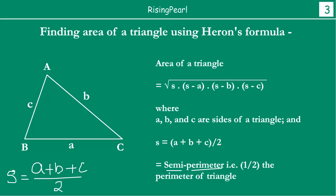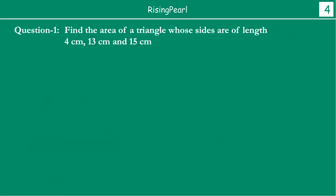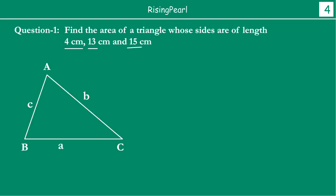Now that we know what Heron's formula is, let us do a quick application. Let us solve a question: find the area of a triangle whose sides are of length 4 cm, 13 cm, and 15 cm. We will draw a rough diagram — a triangle ABC. Here, the longest side is 15 cm, let's call it b. Then 13 cm, and the side c is 4 cm.